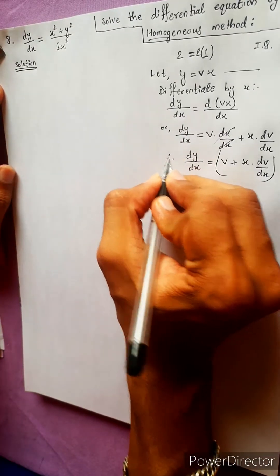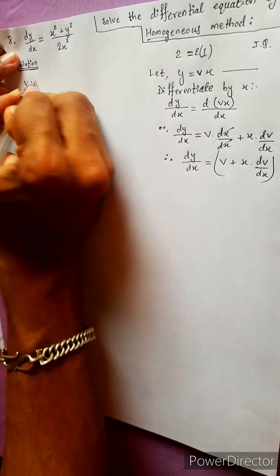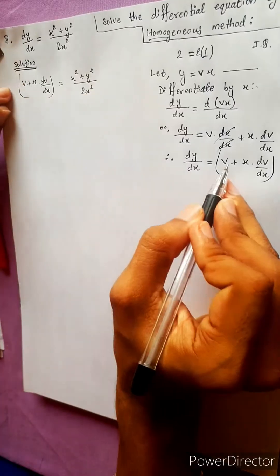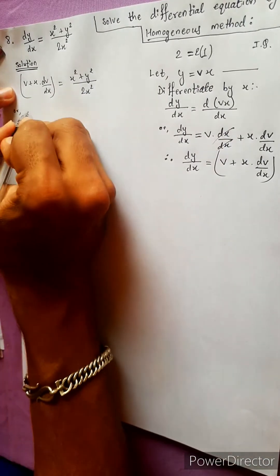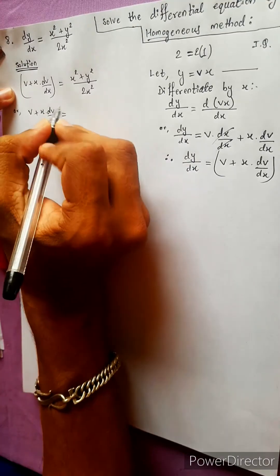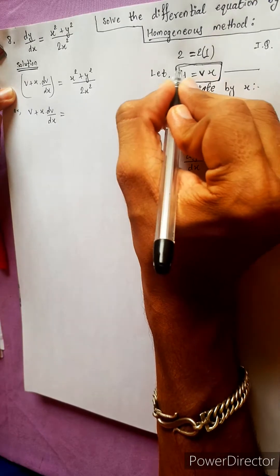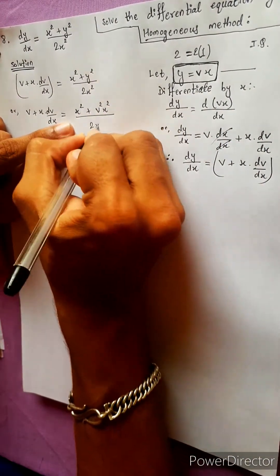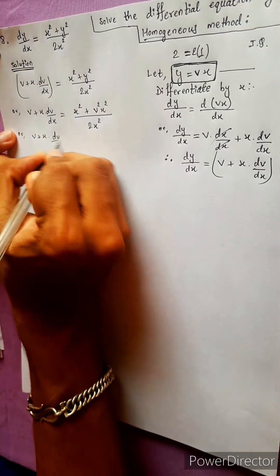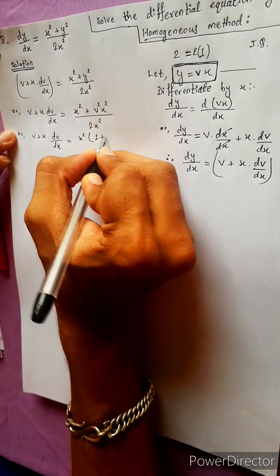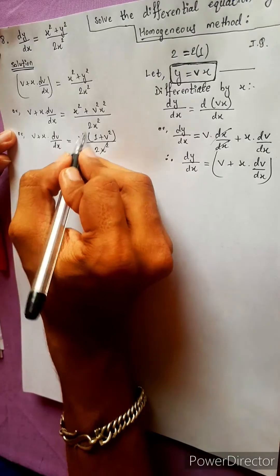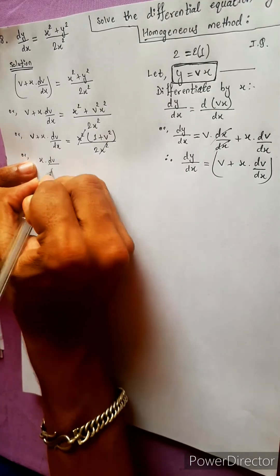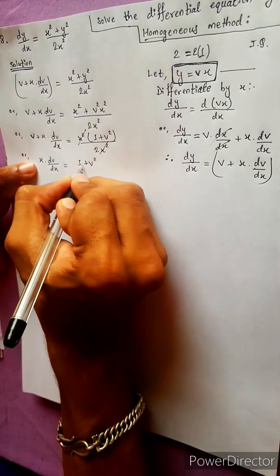The original equation is dy/dx equals x squared plus y squared divided by 2x squared. Substituting v equals y/x and dividing numerator and denominator by x squared gives dy/dx equals one plus v squared divided by two.